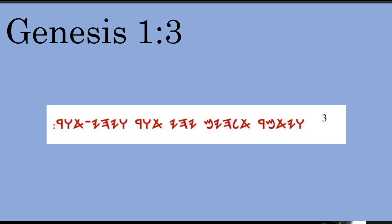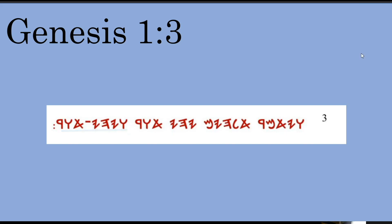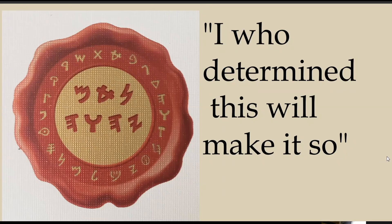We're going to look at Genesis 1:3. Reading the letters, that would read: Waw-Yod-Aleph-Mem-Resh, the second word Aleph-Lamed-He-Yod-Mem, Yod-He-Yod, Aleph-Waw-Resh, Waw-Yod-He-Yod hyphenated to Aleph-Waw-Resh — something like 'Wa-i-ha-ma-ra, ala-ha-i-ma, yi-ha-i, awa-ra, wa-i-ha-i, awa-ra.' So Dalit, that fourth letter — you can see the Aleph-bet around the circle of the seal. This is Nam-Yawah, which you could say is 'I who determined this will make it so.' It is his stamp, his officialness over every letter, every word.